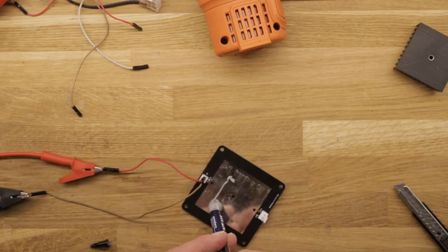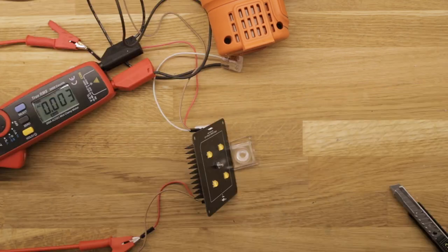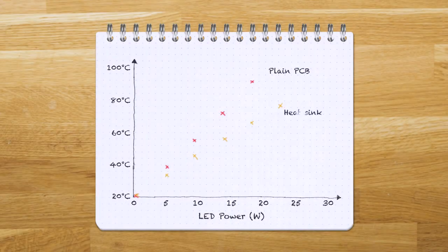The heatsink is mounted to the PCB with a screw and a little thermal paste. It helps keeping everything cooler by creating a larger surface area which increases the heat transfer to the ambient air.